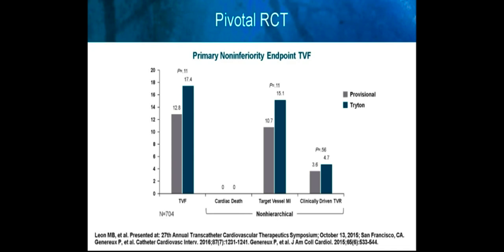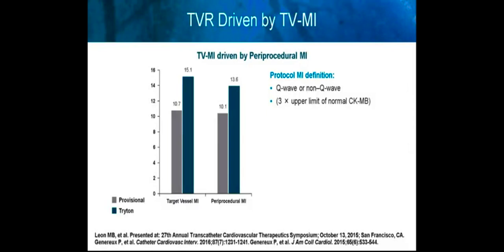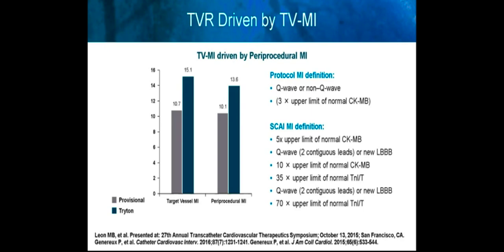The original Triton pivotal randomized controlled trial randomized patients to a provisional technique against a Triton bifurcation dedicated stent, looking for a primary non-inferiority endpoint of target vessel failure. In this original study, target vessel failure did not meet the primary endpoint. While there was no difference in cardiac deaths or clinically driven target vessel revascularization, this difference in target vessel failure was largely driven by an increase in target vessel myocardial infarction. The target vessel MI was largely driven by periprocedural myocardial infarction, where the protocol MI definition was Q-wave or non-Q-wave MI with biomarkers three times the upper limit of normal of CK-MB.